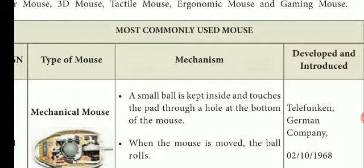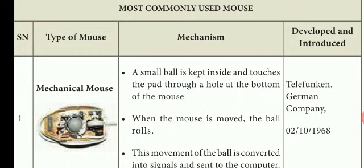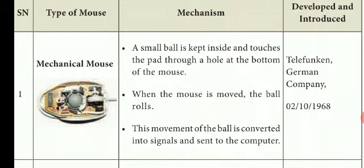The mechanical mouse is one of the most commonly used types. A small ball is kept inside and touches the pad through a hole at the bottom of the mouse. When the mouse is moved, the ball rolls.